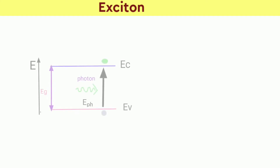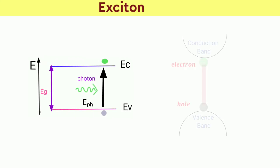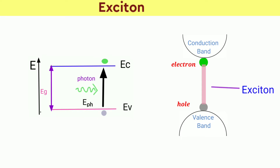An exciton is formed when a light photon is absorbed by a semiconductor. This excites an electron from the valence band into the conduction band, leaving behind a hole in the valence band. This electron-hole pair is known as an exciton.